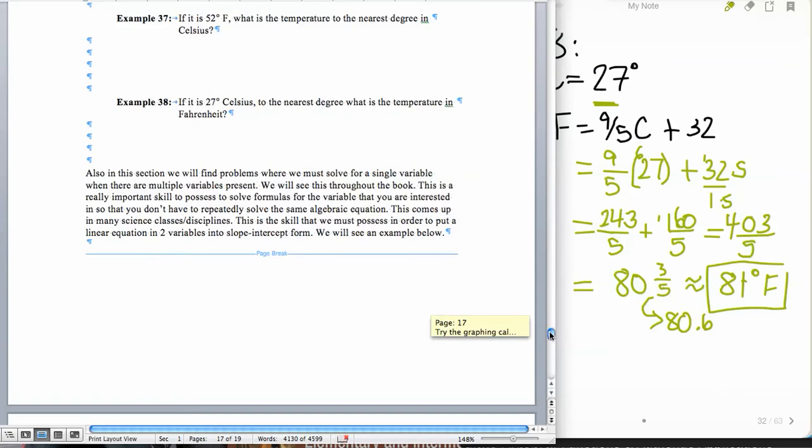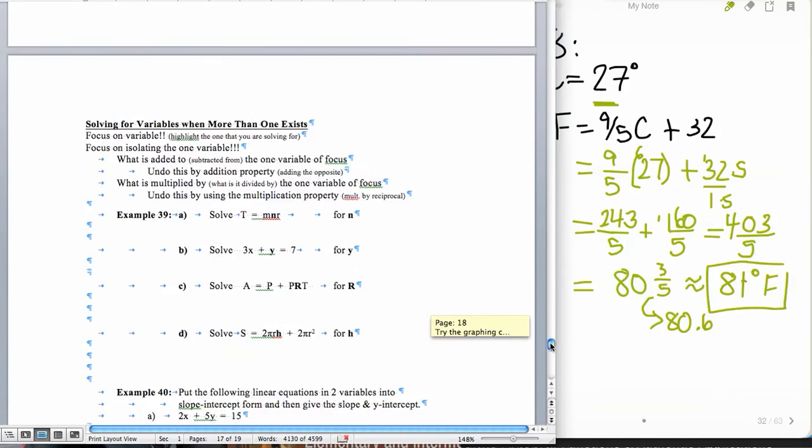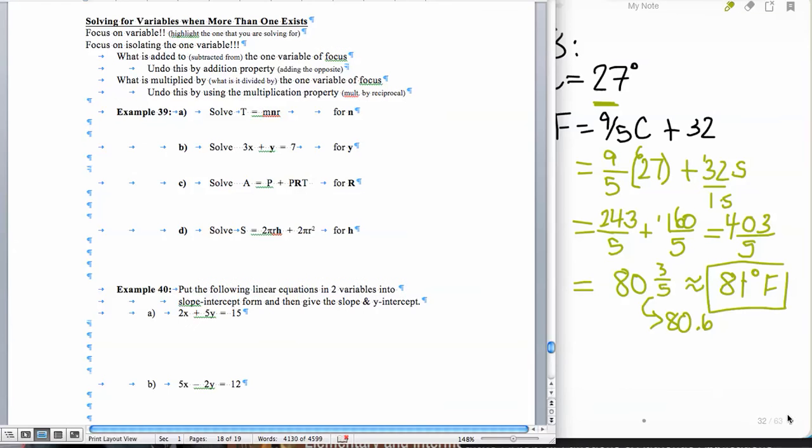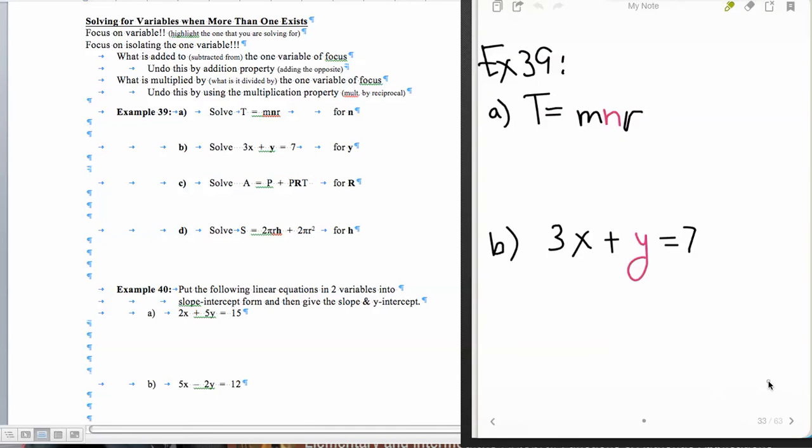All right, now moving on to our next problem, which is solving an equation when more than one variable exists. Our major topic in this section is putting equations in slope-intercept form, but we want to focus on the variable we're solving for and use our skills of solving a linear equation for that variable. What is added to that variable of focus, we'll undo with addition. What's multiplied by it, we'll undo with the multiplication property.